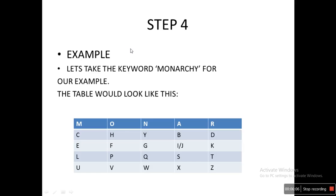Step 4: we'll solve a complete example. We take the keyword 'monarchy' again. The 5x5 matrix is: row 1: M O N A R; row 2: C H Y B D; row 3: E F G I/J K; row 4: L P Q S T; row 5: U V W X Z. We write the keyword first, then fill in remaining letters alphabetically, skipping any already present.